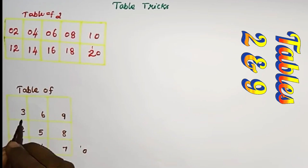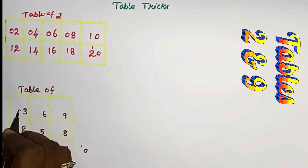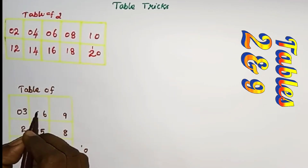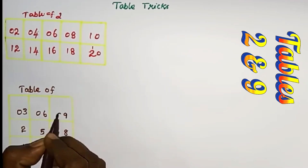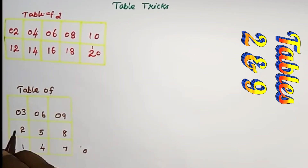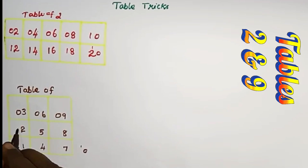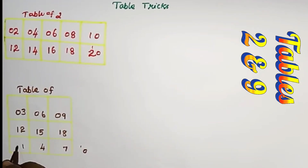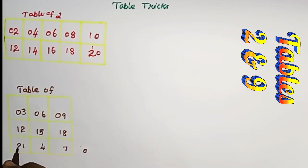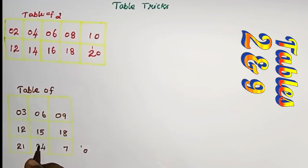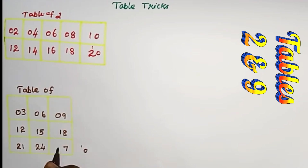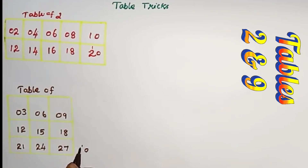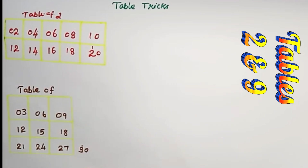First row write 0's: 0, 0, 0. Second row write 1: 1, 1, 1. Third row write 2: 2, 2, 2. 2 plus 1 is 3. 3, 0.